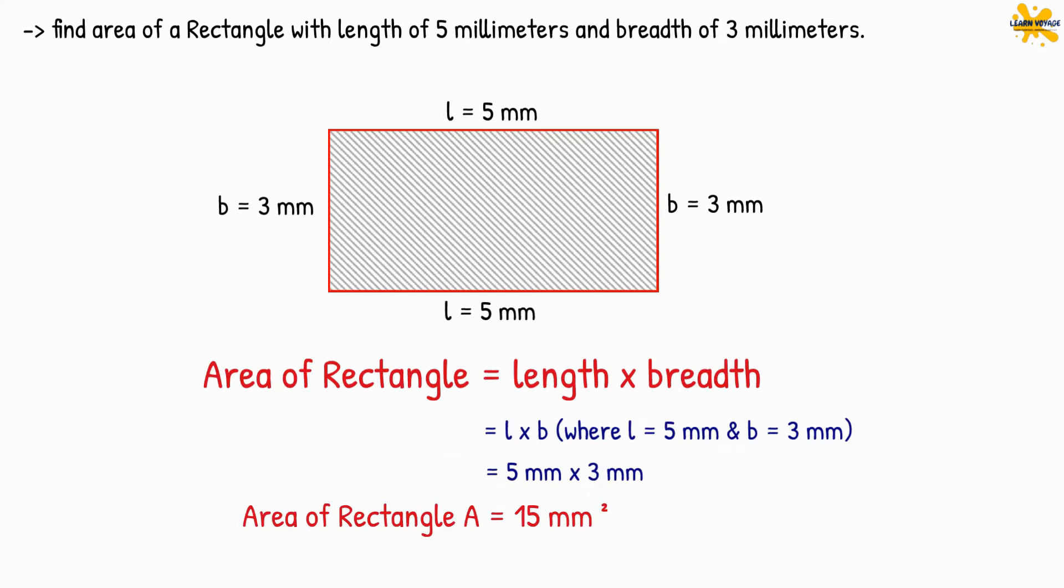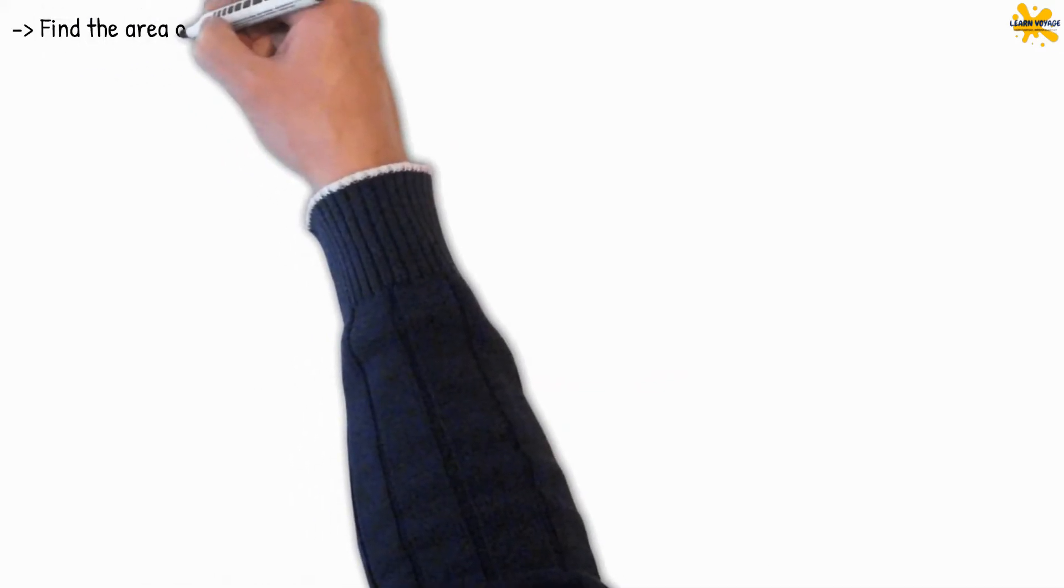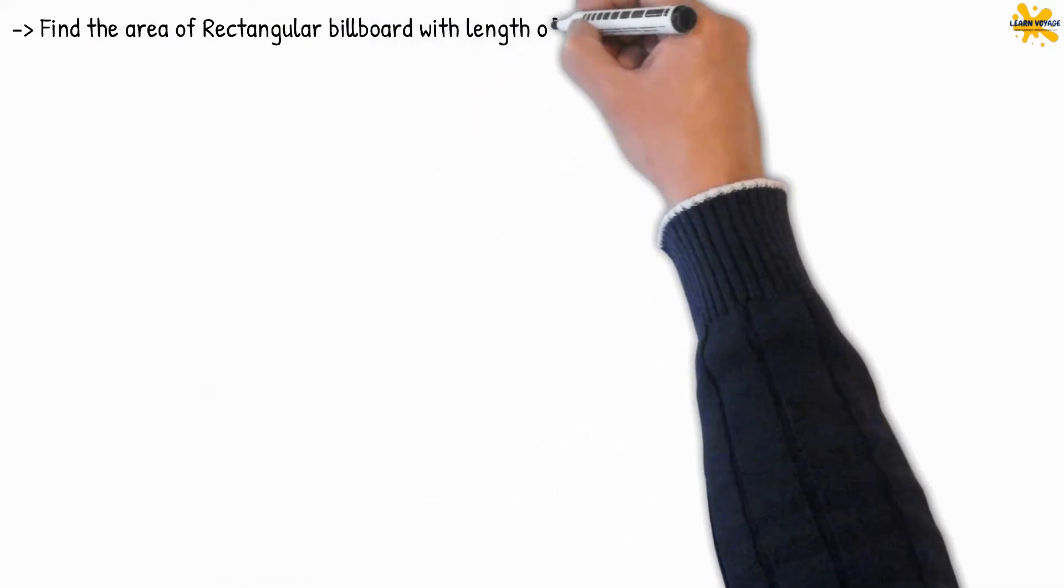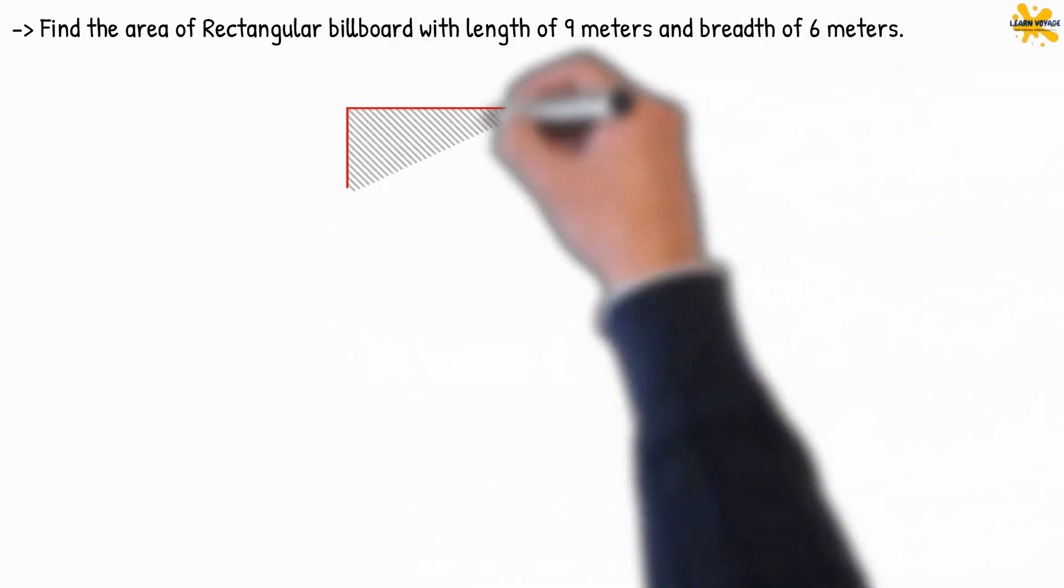Now you give it a try. Find the area of rectangle billboard with a length of 9 meters and breadth of 6 meters.